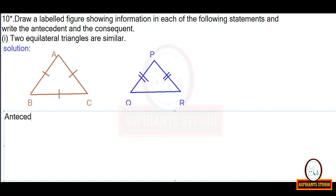The antecedent is the given statement. We are given two equilateral triangles — triangle ABC and triangle PQR are equilateral triangles. The consequent is what is to be proved: we have to prove that the two equilateral triangles are similar.